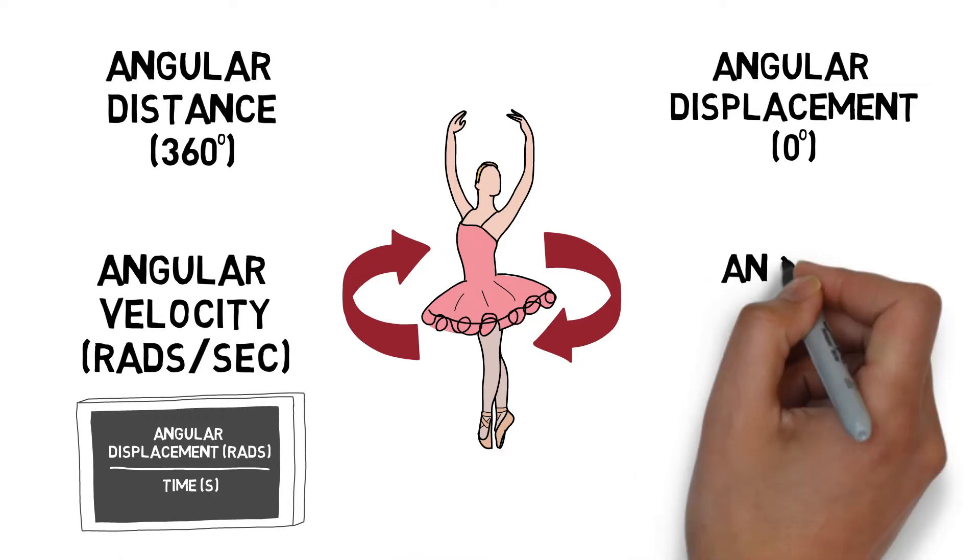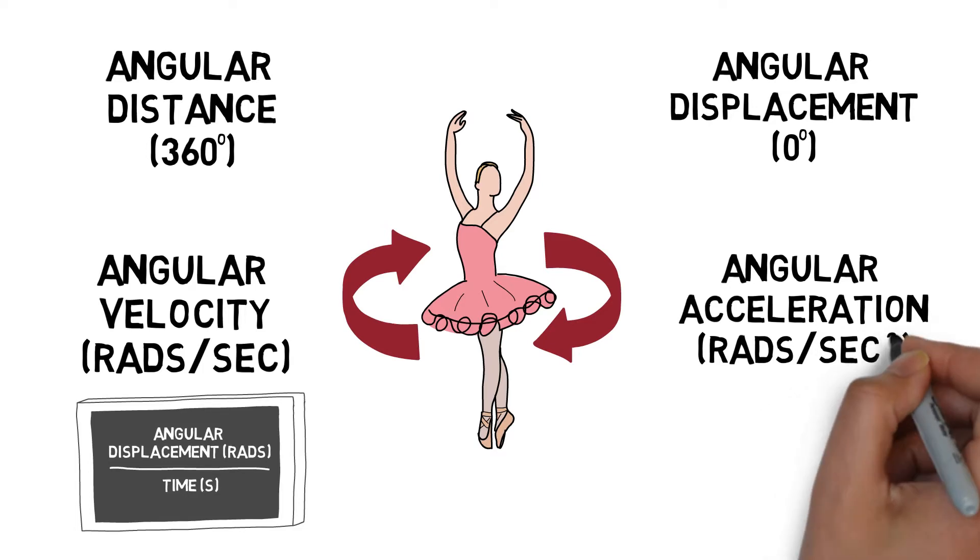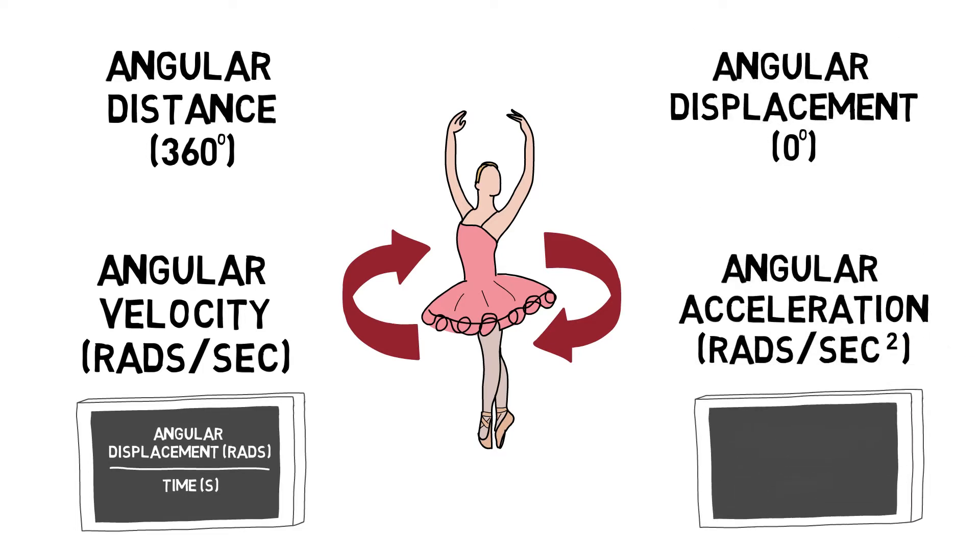Angular acceleration is the rate of change of angular velocity and is measured in rads per second squared. Angular acceleration can be calculated by taking angular velocity over time.